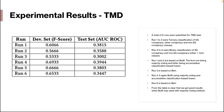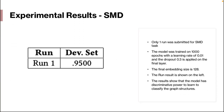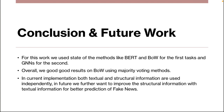For the SMD task, we submitted only one run. The model was trained on 1000 epochs with a learning rate of 0.01, and a dropout of 0.3 was applied on the final layer. The final embedding size is 128. The results show that the model had discriminative power to learn and classify the graph structure.